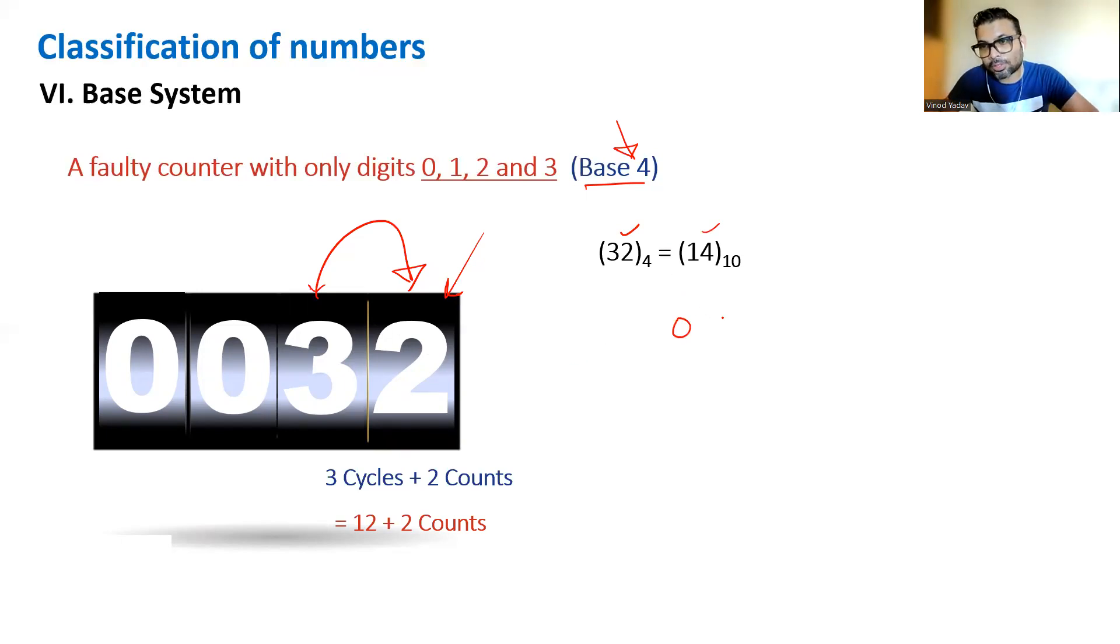Zero one zero, one cycle. Zero one one. Zero one two. Zero one three. One more cycle done. This will be read as eight in our base. Nine, ten, eleven. So much like a cycle. This is base four.